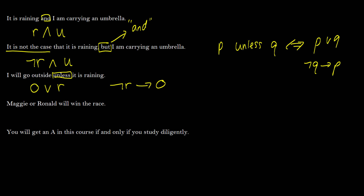This is one of those things you're probably going to see on your midterm just because it's a pain to remember what it means. Now: 'Maggie or Ronald will win the race.' What might confuse you is that this looks like just two names joined by OR. You have to paraphrase it — it really means 'Maggie will win the race OR Ronald will win the race,' so we write M ∨ R. This isn't always straightforward, which is why translation can be tricky.